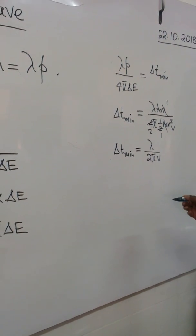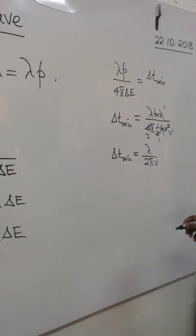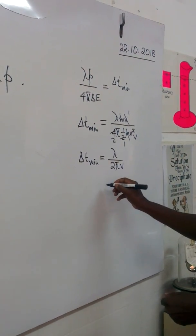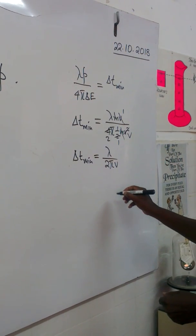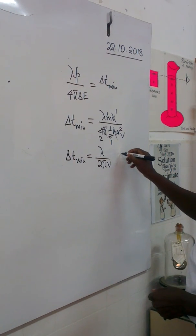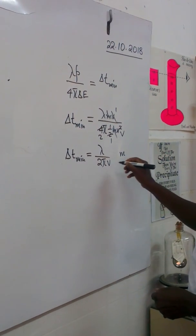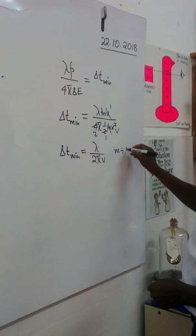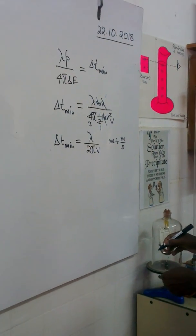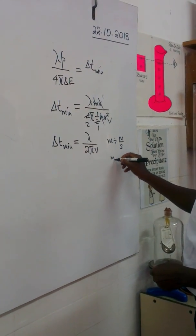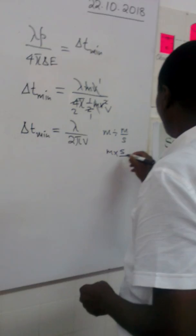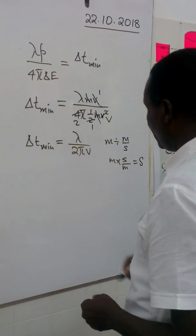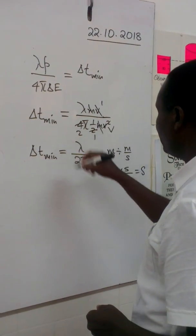We can carry out a dimensional analysis of the units to see if this actually gives us a unit of time. By dimensional analysis, wavelength is measured in meters, divided by velocity in meters per second. This gives meters times seconds over meters, which equals seconds. So dimensional analysis confirms it is a unit of time.